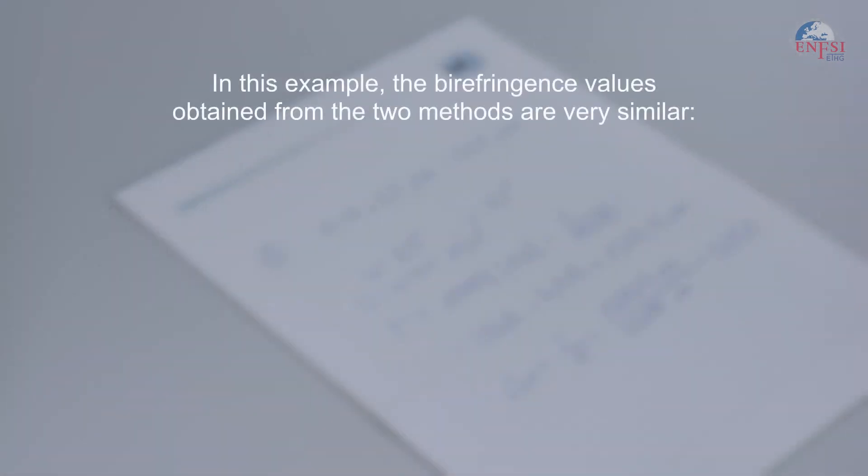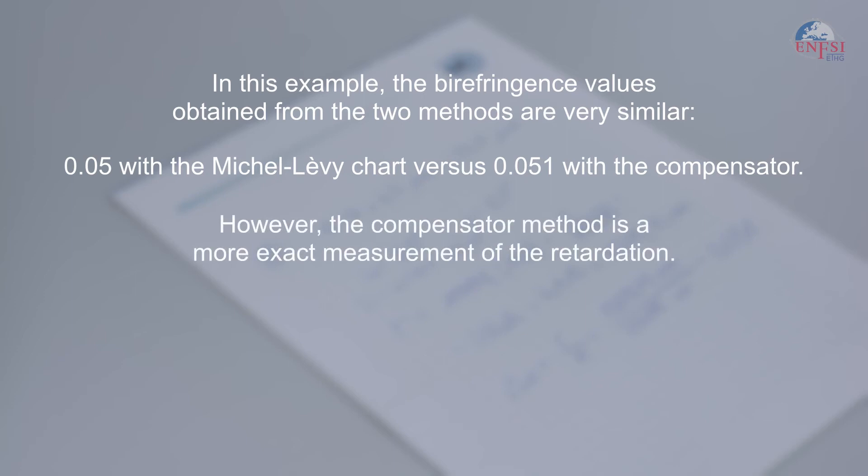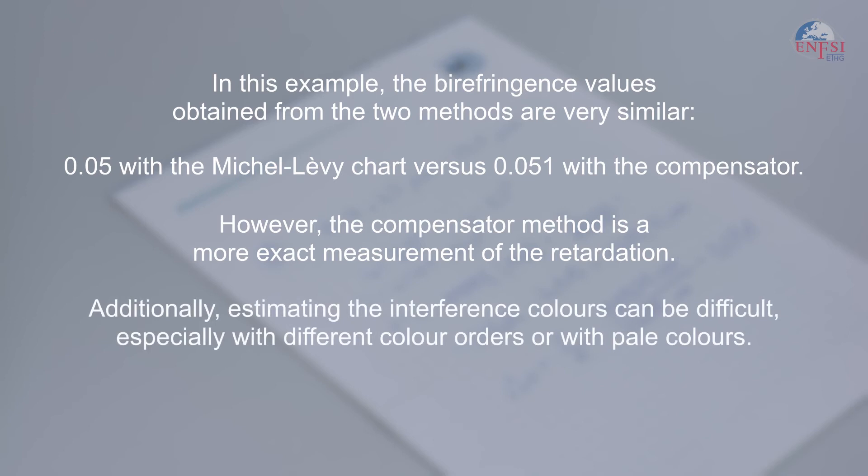In this example, the birefringence values obtained from the two methods are very similar. 0.05 with the Michel-Levy chart versus 0.051 with the compensator. However, the compensator method is a more exact measurement of the retardation. Additionally, estimating the interference colors can be difficult, especially with different color orders or with pale colors. We can observe this in our second example using a different fiber type.